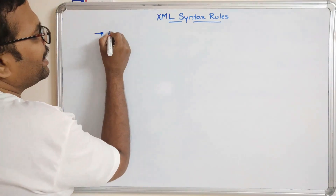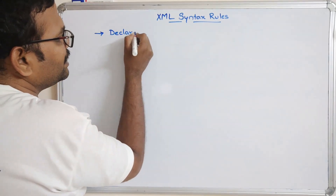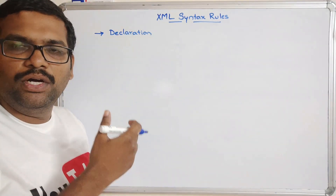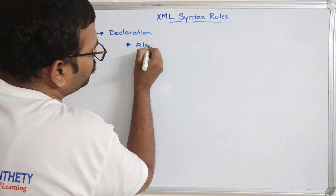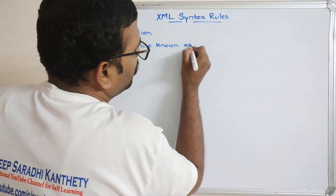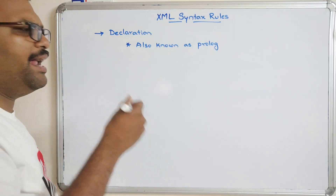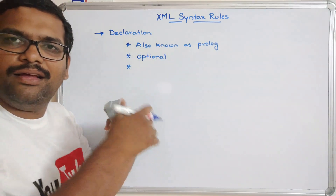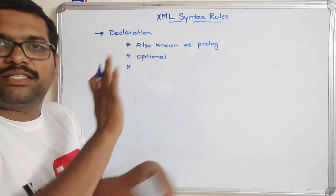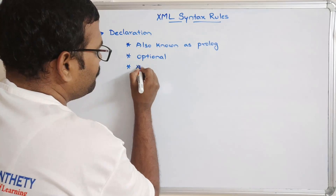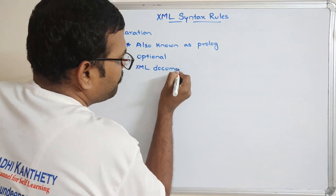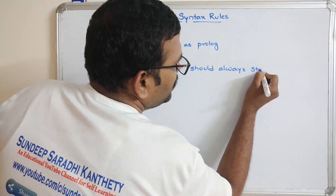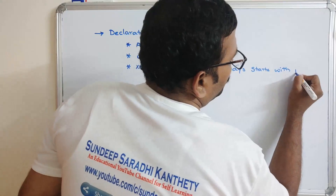The first aspect is regarding the XML declaration. We have already seen this declaration in our first video. It is also known as a prologue. This is optional, and if you want to write the declaration, the XML document should always start with this statement — that is the rule we have to follow.